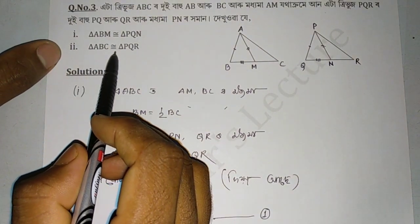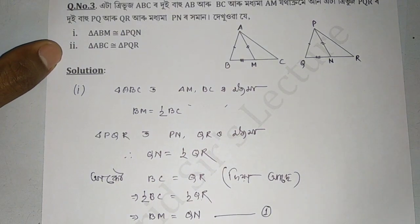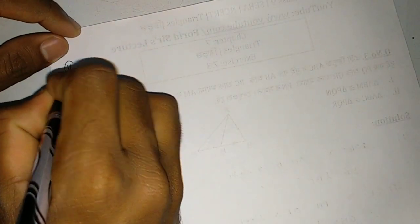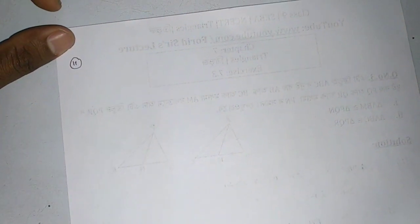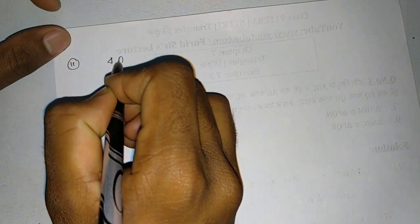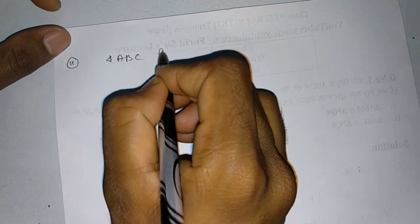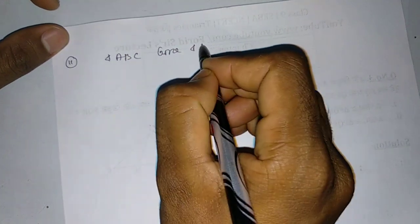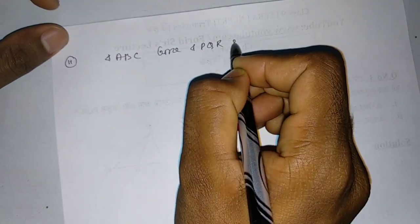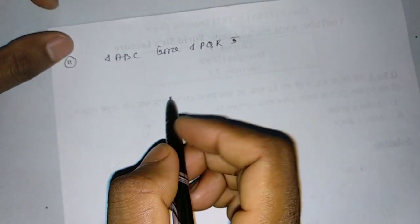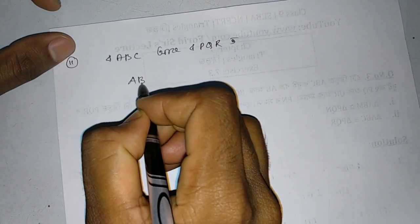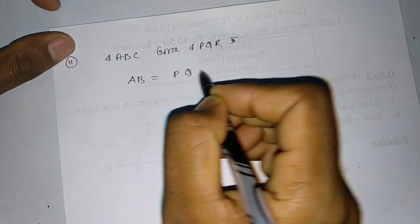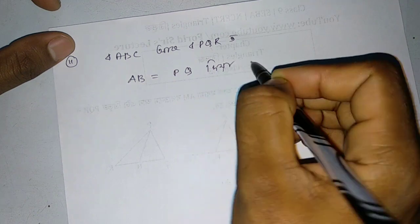Now we move to the second part. We have triangle ABM or triangle PQN as number one. For triangle ABC or triangle PQR, we go to number two. Triangle ABC and triangle PQR are what we need to prove congruent.